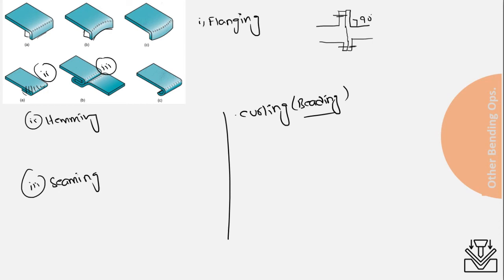That concludes this lecture on sheet metal bending. In the next lecture, we will discuss the third type of sheet metal process — the last type — which is drawing or deep drawing operation. After that, we will discuss some specialized sheet metal operations performed using rubber tools or other specialized tools.